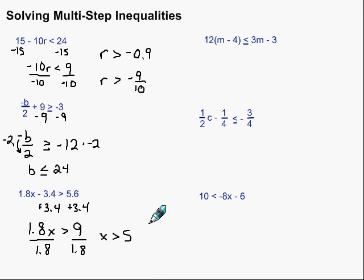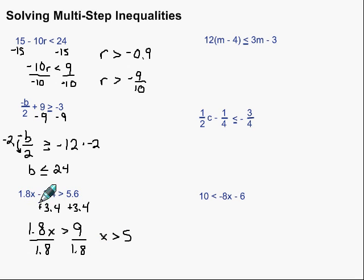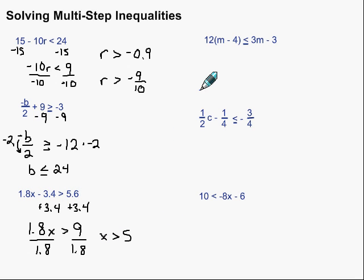One thing I haven't mentioned yet is we can always take that back and check. What this means is that any number greater than 5 will work in our inequality. So if we take 10 and put it into our inequality, it should give us a true inequality. 10 times 1.8 would be 18; 18 minus 3.4 is indeed greater than 5.6. So remember, you can always check these the same way you check equations.